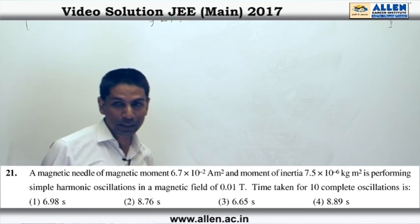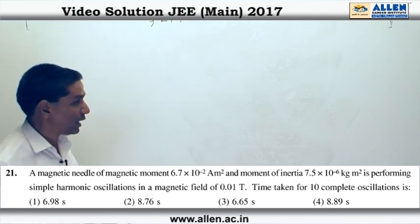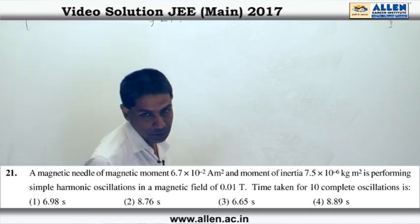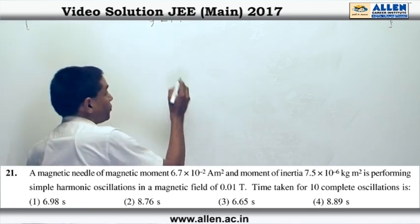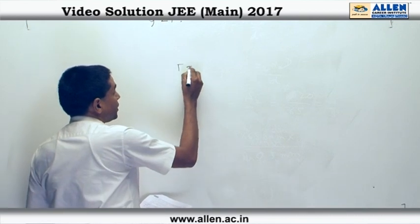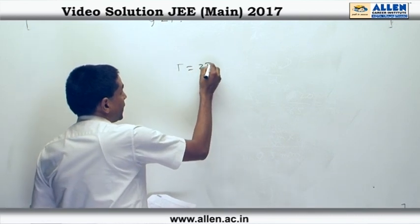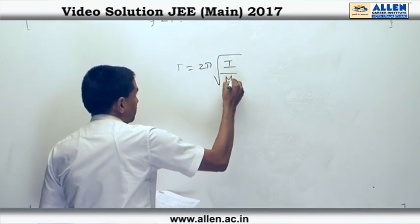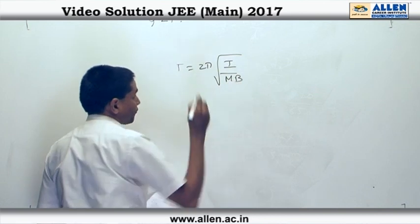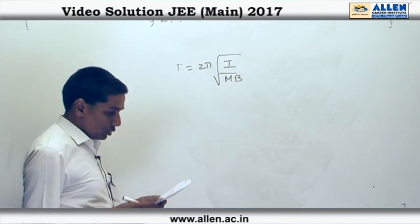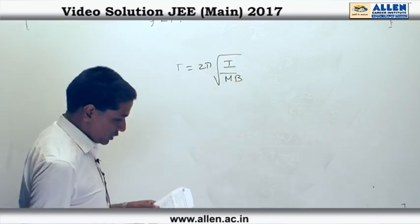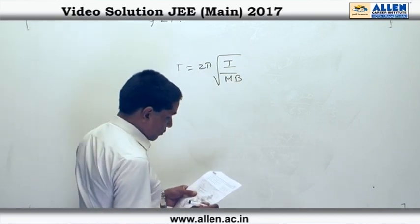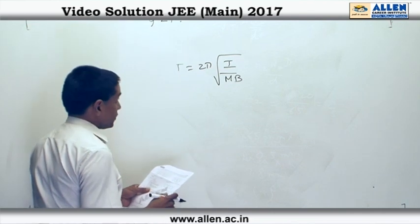Question 21: there is a magnetic needle of magnetic moment which is oscillating in a magnetic field. The simple formula for time period is 2π√(I/mB). The moment of inertia is given, magnetic field is given, and magnetic dipole moment is given.